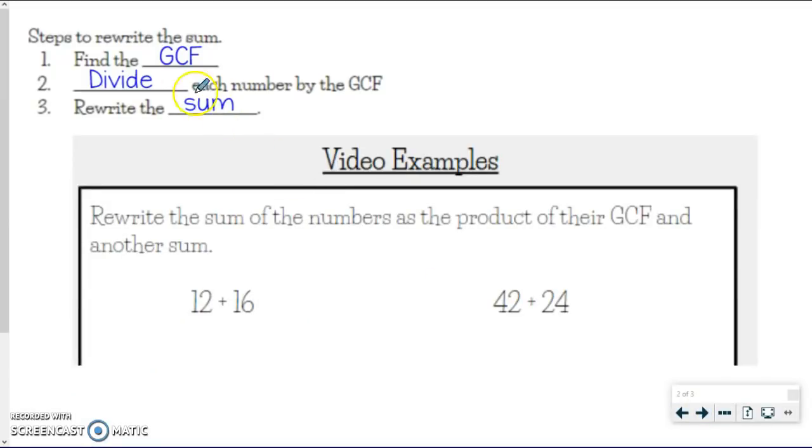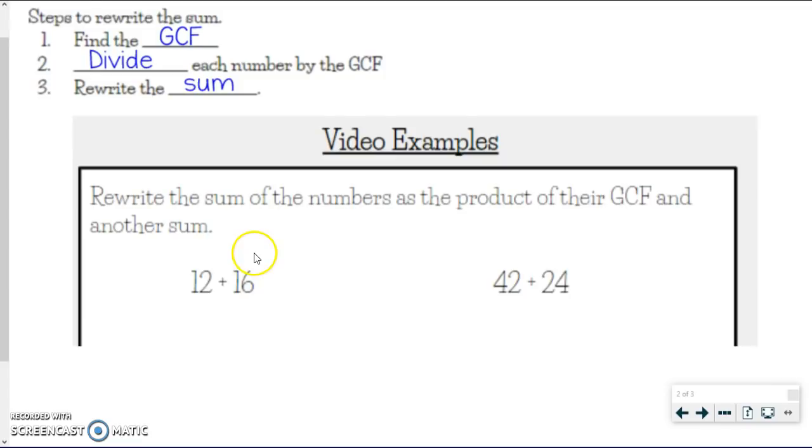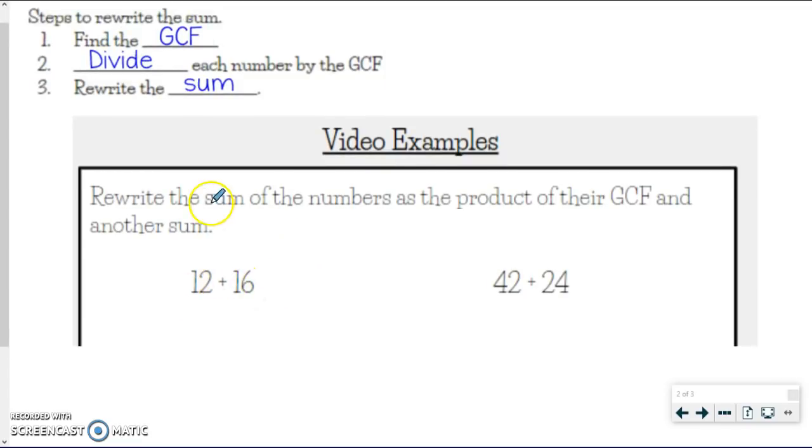Let's use the distributive property. So it's asking us to rewrite the sum of the numbers as the product, product means multiplication, of their GCF and another sum. So right now, we've got 12 plus 16, and that's just a sum. But we could find the GCF between those two numbers, pull it out, and show it as a product. So if I look at 12 and 16, the first thing I need to do to rewrite this sum is to find the GCF. So I'm going to draw my division ladder.